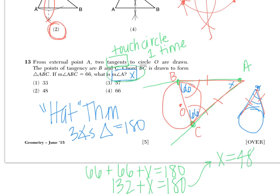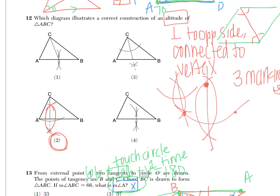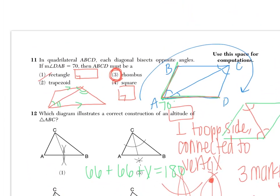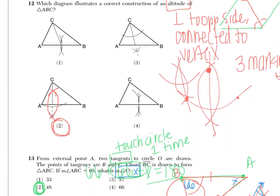And because I chose to call A X, then that means A is 48. So the answers for this page are the following. We have number 11 is choice 3, 12 is choice 2, and 13 is choice 2.